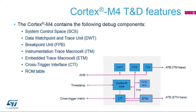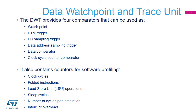A data watchpoint (DWT) comparator compares one of the following with the value held in its DWT comp register: a data address, an instruction address, a data value, or the cycle count value (for comparator 0 only). For address matching, the comparator can use a mask to match a range of addresses. On a successful match, the comparator generates DWT data trace packets containing the address of the instruction that caused a data access, an address offset (bits 15 to 0), or the matched data value. It can also generate a watchpoint debug event on the PC value or access data address, or a CMP match N event that signals the match outside the DWT unit.